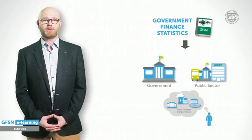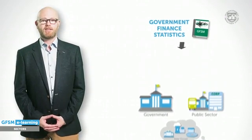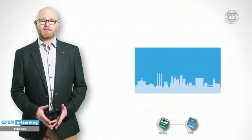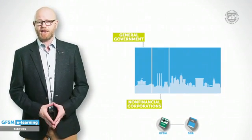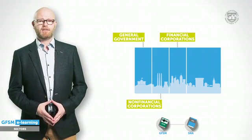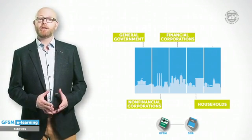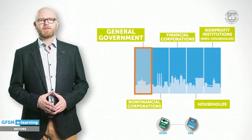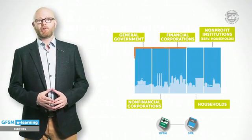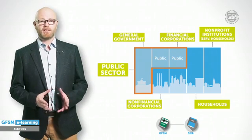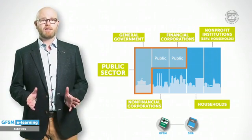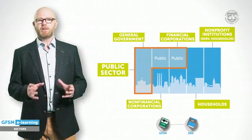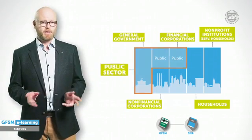GFSM builds on the standard statistical concepts set out in the System of National Accounts. In macroeconomic statistics, the resident economy is divided into five sectors: the general government sector, non-financial corporation sector, the financial corporation sector, the household sector, and the non-profit institutions serving household sector. The general government sector is particularly relevant for fiscal and macroeconomic analysis. In addition, the broader concept of the public sector is relevant to assess the full extent of government activities and associated risks. The public sector is a hybrid of the general government sector plus the public non-financial and financial corporations controlled by the government.